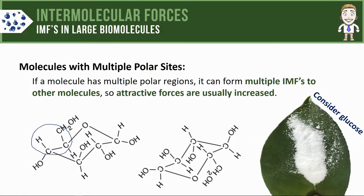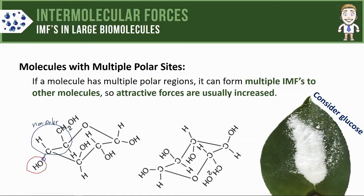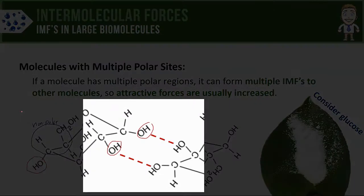Instead, you might look at a region of the molecule — like right here that I'm circling in blue — and since it's only made of carbon bonded to hydrogen atoms, and the electronegativity difference between those atoms is relatively small, you might say this region of the molecule tends to be non-polar. At the same time, there are other areas of this molecule that contain hydrogen bonded to oxygen, and between those two atoms there's a very large electronegativity difference, so those might be regions that are more polar. You can see there are lots of different ones, like here on the left or here on the bottom right.